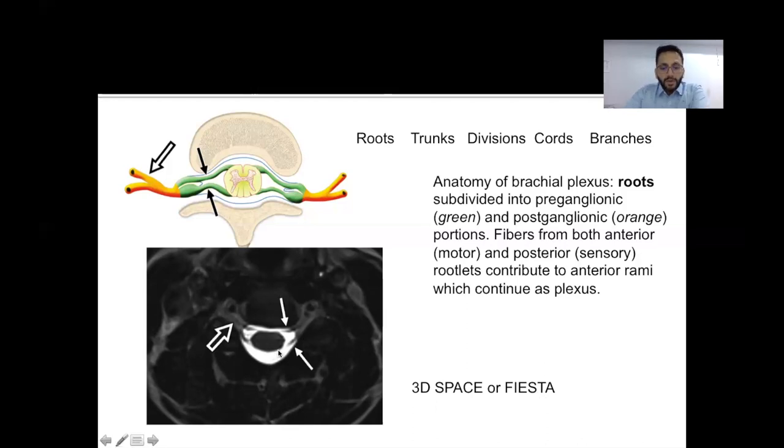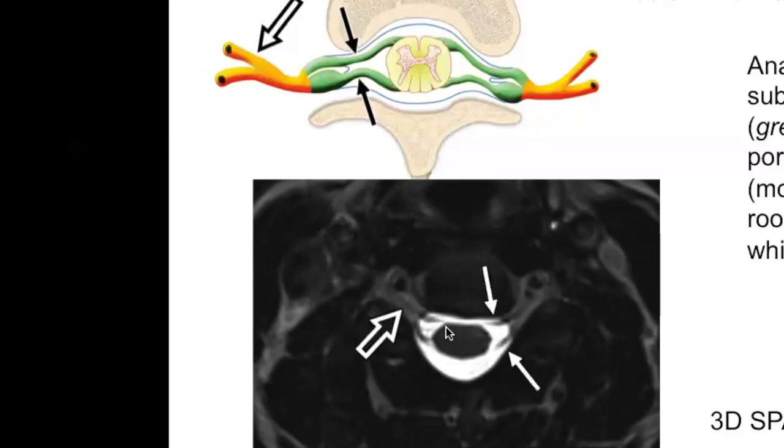So this is the image here which shows the ventral rootlet on the right side. So this is the right ventral rootlet, the posterior rootlet. These joined together to form the exiting nerve here. This nerve again will divide into the ventral ramus and the posterior ramus. In nerve root avulsion, we will see that this segment is lost and there will be a formation of a pseudomeningocele in this region. We will come to these images later.